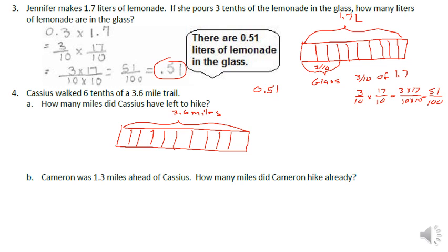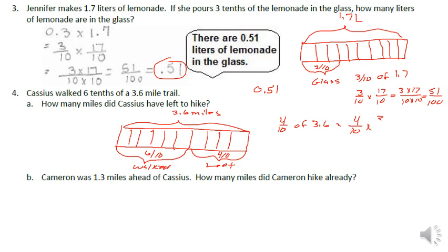He walked 6 tenths, which leaves 4 tenths remaining. We want to know what 4 tenths of 3.6 miles is: 4 tenths times 36 tenths equals 4 times 36 over 10 times 10. Now 4 times 30 is 120, and 4 times 6 is 24, giving 144 hundredths. The 4 goes in the hundredths place, so he has 1.44 miles left.